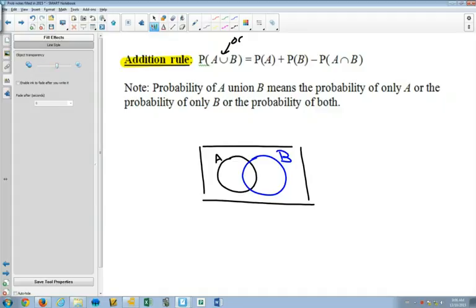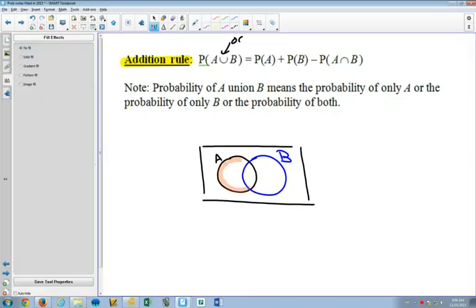All right. So if I want to find the probability of A or B, and I take the probability of A, so that's all of this one. Then I add the probability of B. That's all of this one. You'll notice that section in the middle gets darker, because you've added it twice.